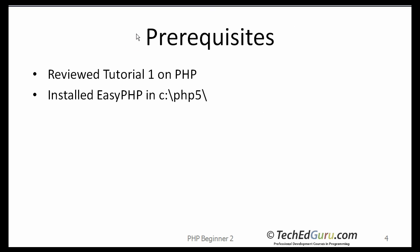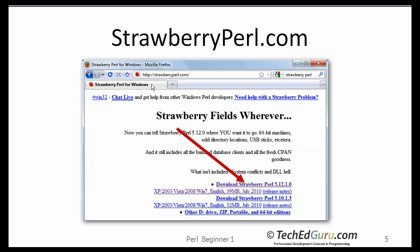This tutorial assumes that you already have installed EasyPHP in CPHP5. If not, I suggest you go back and find the PHP tutorial available on this website and listen to the first lesson in that tutorial series. You will also need a Perl processor. One I recommend is available from strawberrypearl.com, and currently the version is 5.12.1.0 — I suggest you download that and install it on your computer.